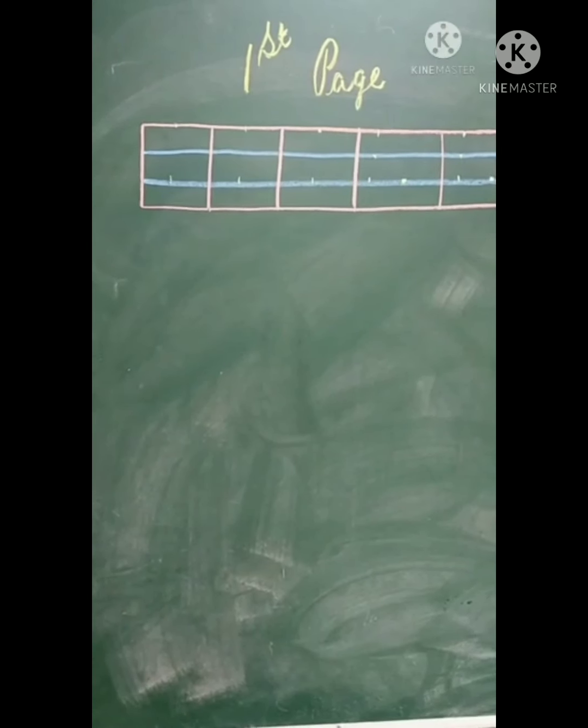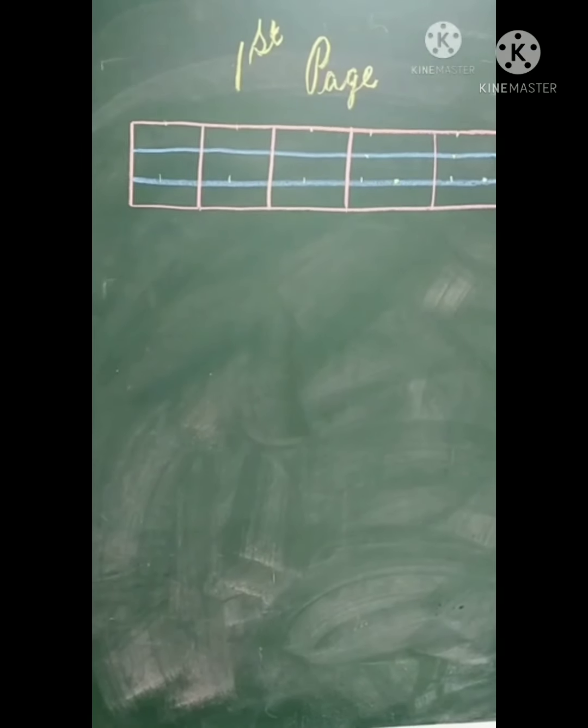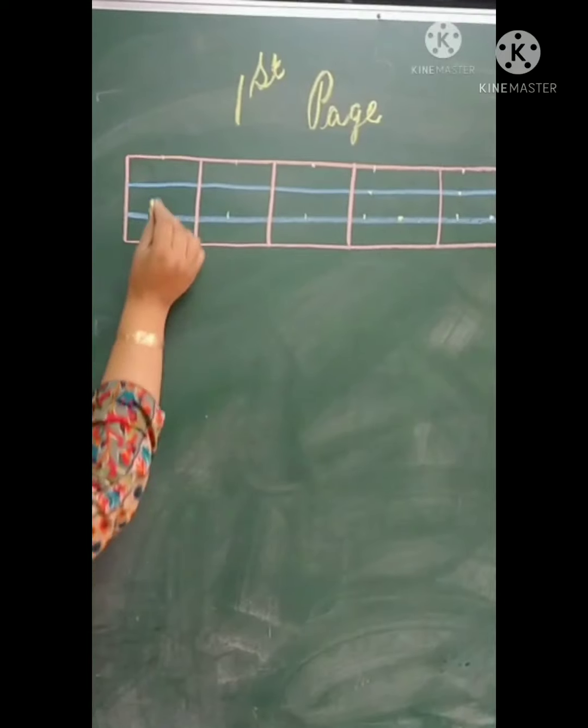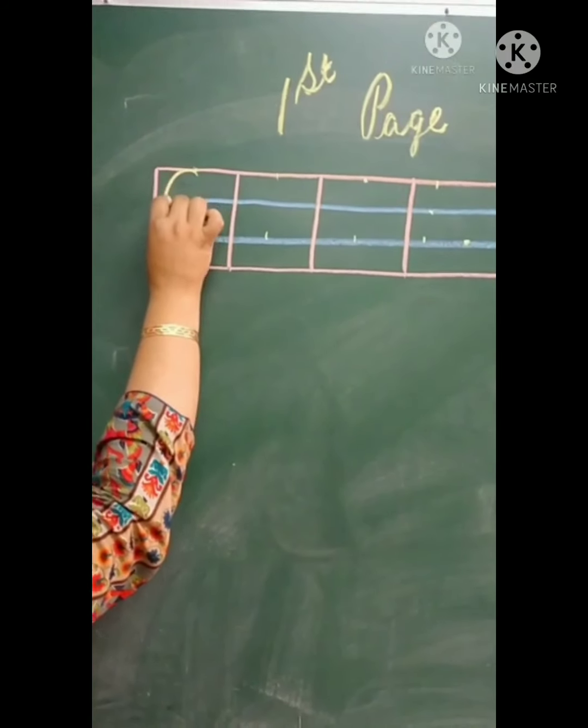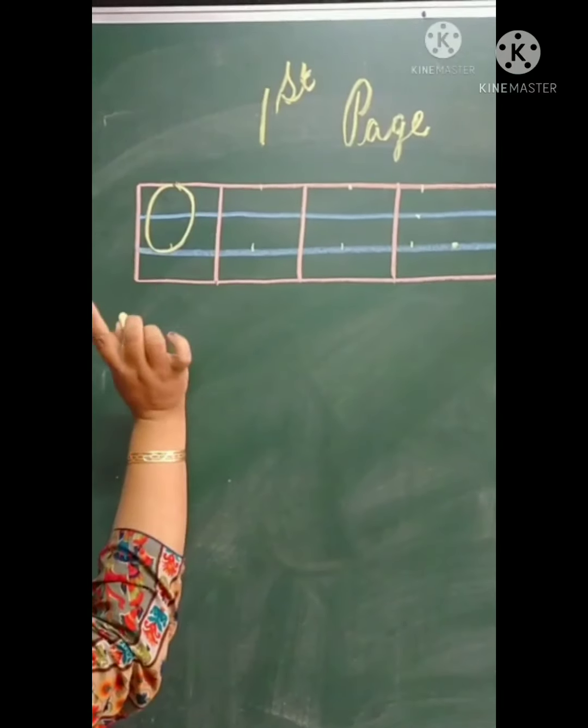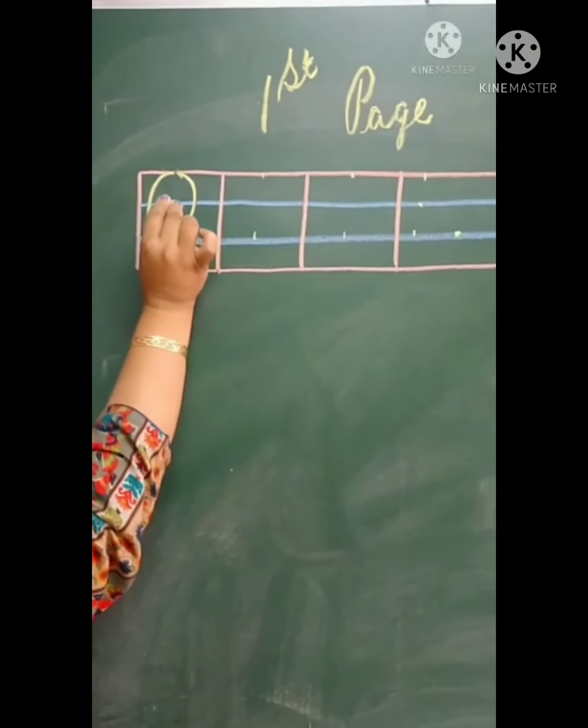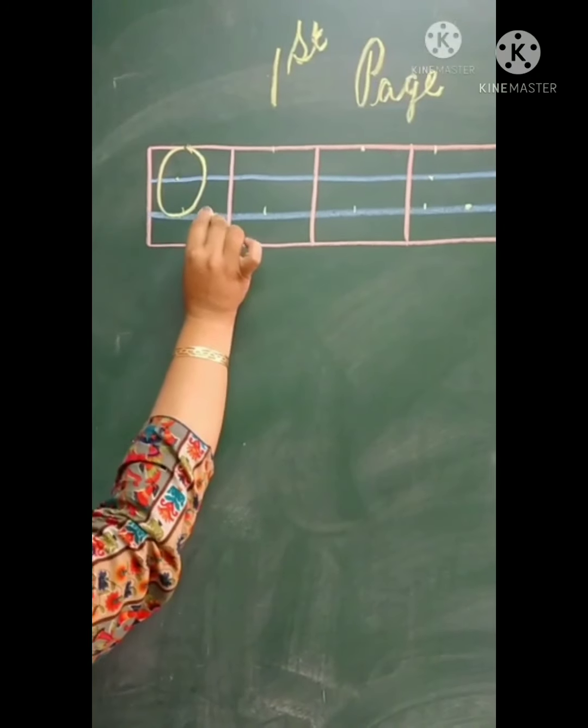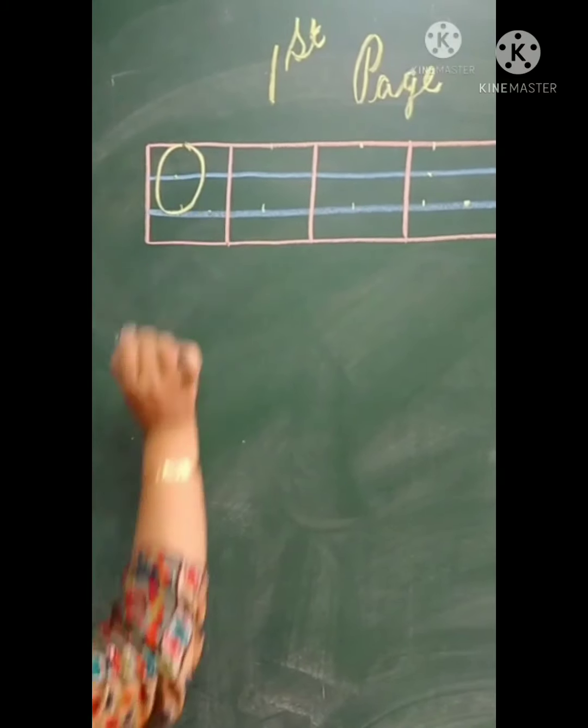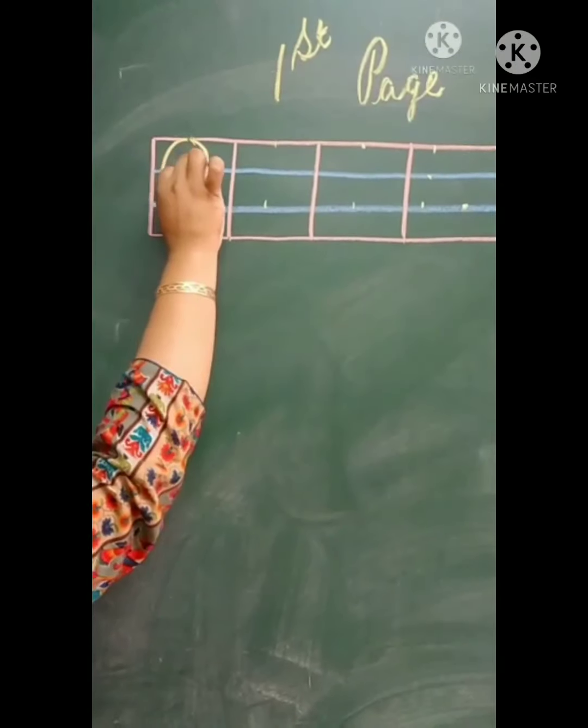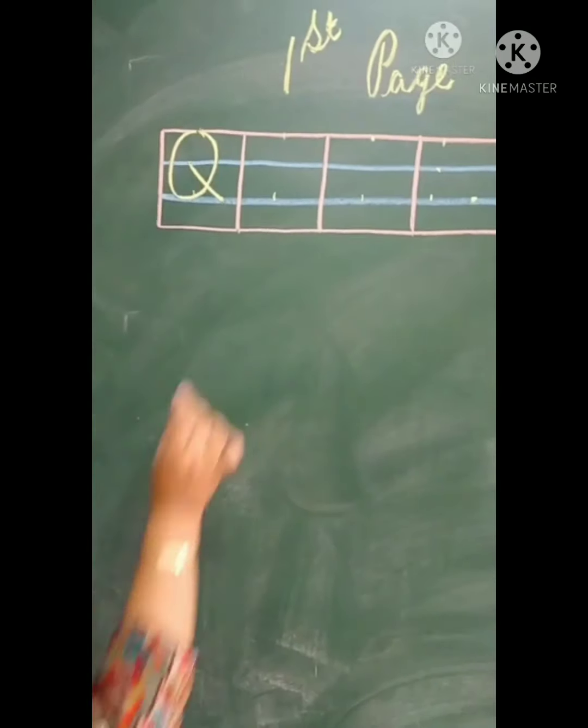Look on the blackboard. You have already learnt A to P, today we will learn Q and R, two alphabets. First we have to learn to make a circle, and then you have to make a slanting line. On the second dot you make a dot, and then on the third line you make a dot. Then from the second dot you bring it to the third dot. This is Q.